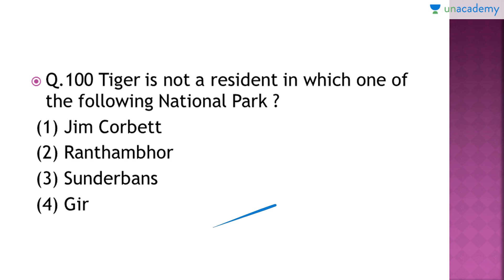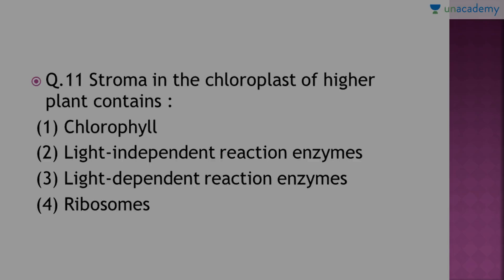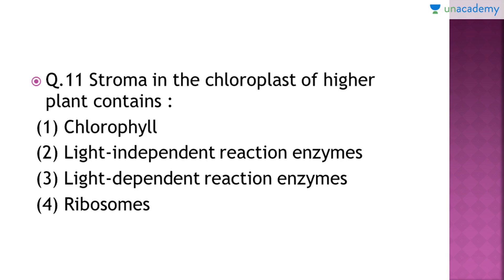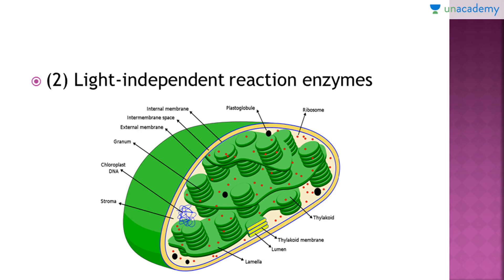Question number 11: 'The stroma in the chloroplast of higher plants contains which of the following?' The right answer is option number 2. The stroma in the chloroplast contains light-independent reaction enzymes. The grana — the round structures — contain light-dependent reaction enzymes, whereas the stroma part contains light-independent reaction enzymes.